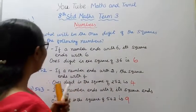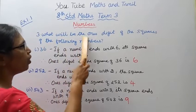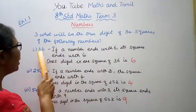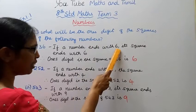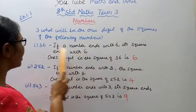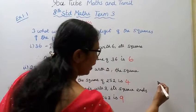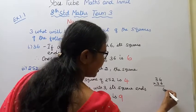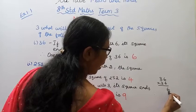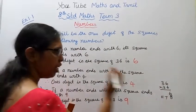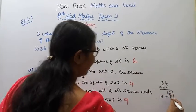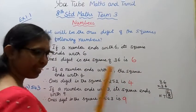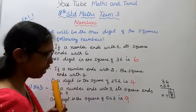For 36 - what will be the ones digit of the square? If a number ends with 6, its square ends with 6. When we multiply 36 by 36, six times six gives six. This six is the ones digit. Therefore, the ones digit in the square of 36 is 6.